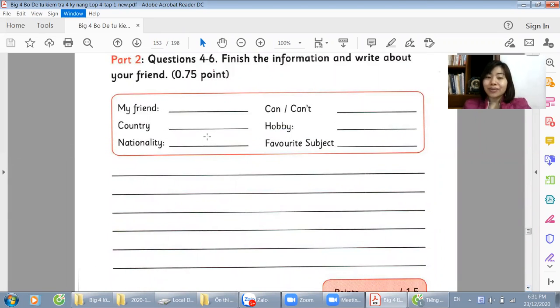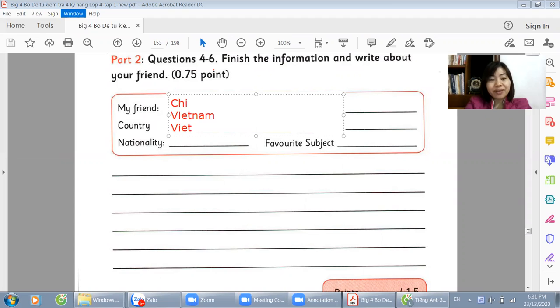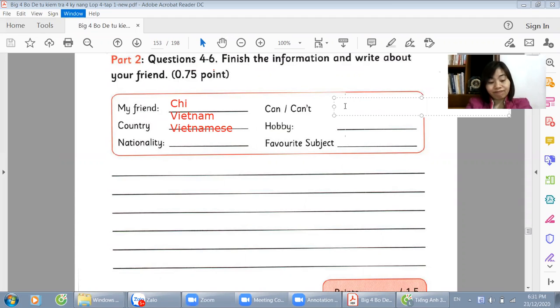We will fill in the information in this table. Then write a paragraph about our friend. Your friend. For example, you can fill in any name. For example, Chi. A simple name. Chi. Vietnam. Nationality: Vietnamese. Can: Swim. Can't: Play chess. Hobby: Cooking. Favorite subject: Maths.